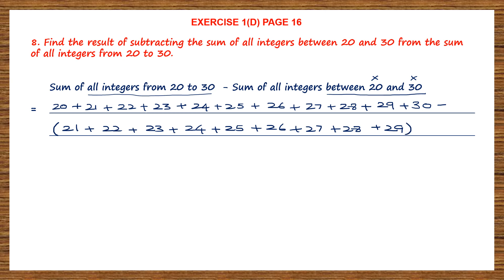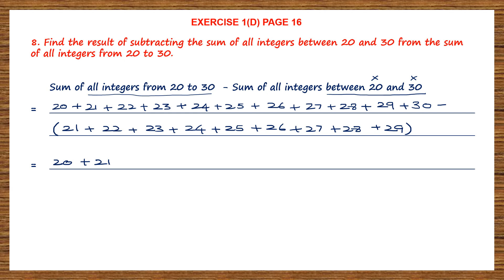Now, instead of adding up all these numbers and then subtracting, there is a shorter way. We are going to write the first set of numbers as it is: 20 plus 21 up to 30 — the sum of all integers from 20 to 30 — and then subtract the bracketed set: 21, 22, 23, 24, 25, 26, 27, 28, 29, and 30.